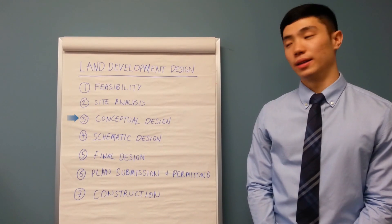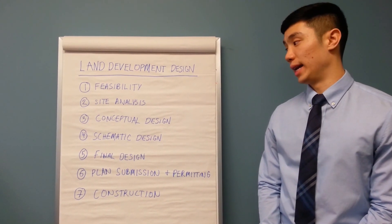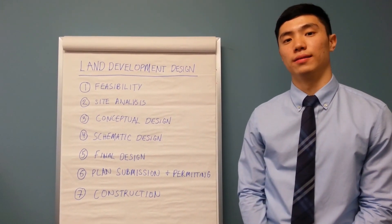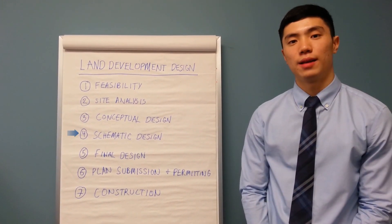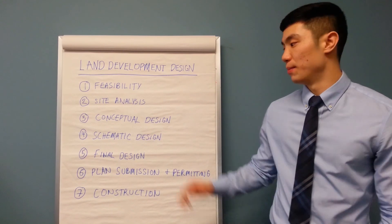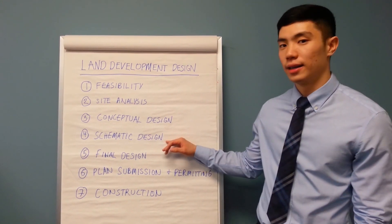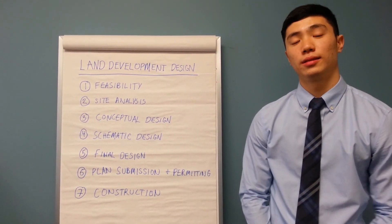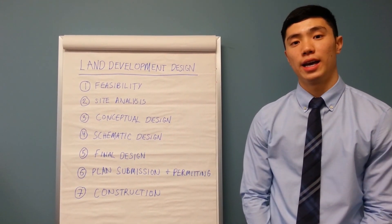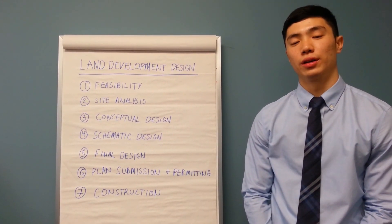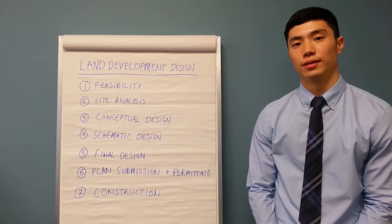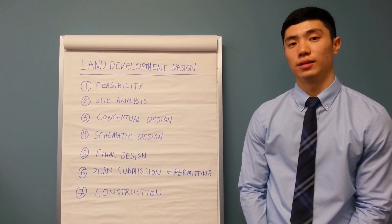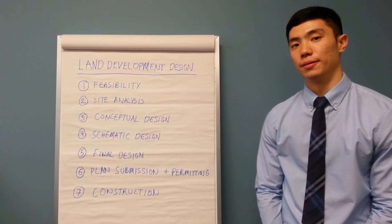Step three, the conceptual design is the initial organization of the site. Step four, the schematic design consists of the site uses, site layout, and the building configurations. Here the scales and dimensions will be implemented.